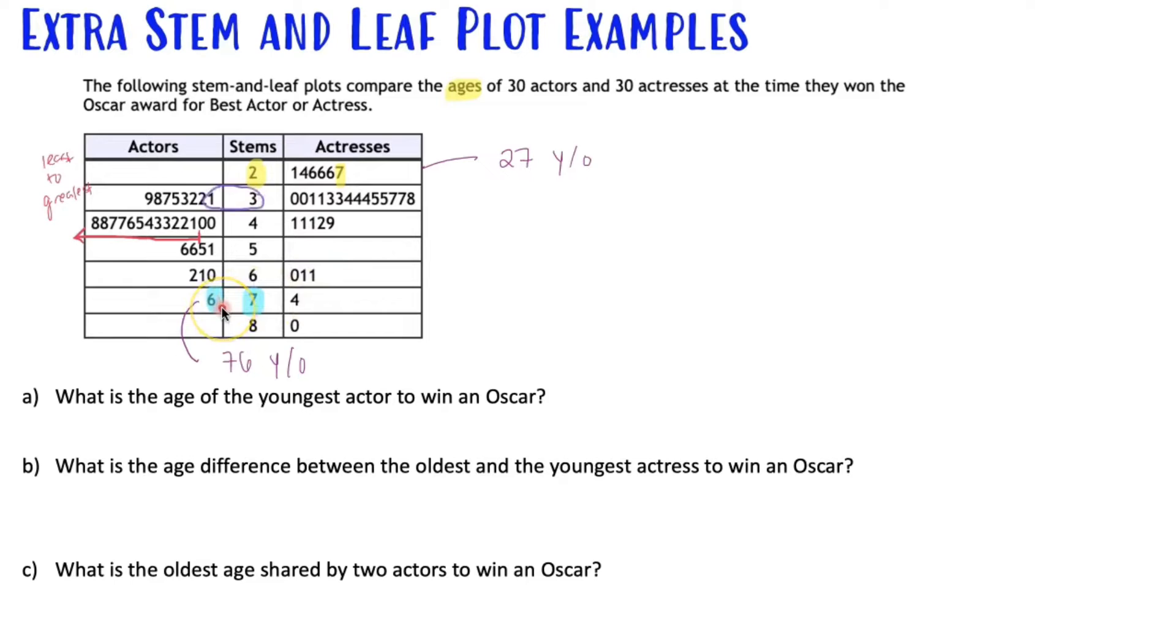So this would be 76 years old or this one here would be 31 years old, which happens to be our answer. The youngest actor to win an Oscar was 31 years old because there's nobody in the 20s. 31.